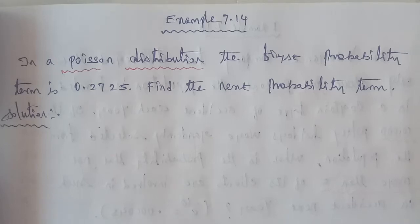Hi students, I am Gopinath. In a given question in a Poisson distribution, the first probability term is 0.2725. Find the next probability term.